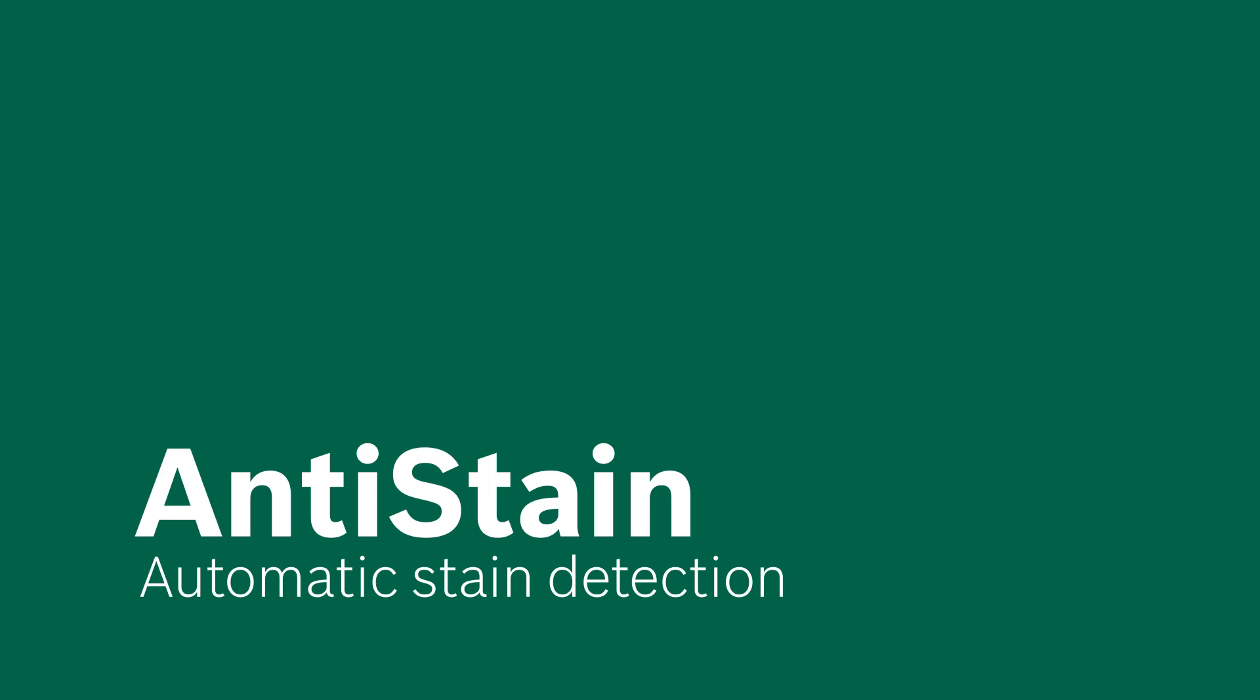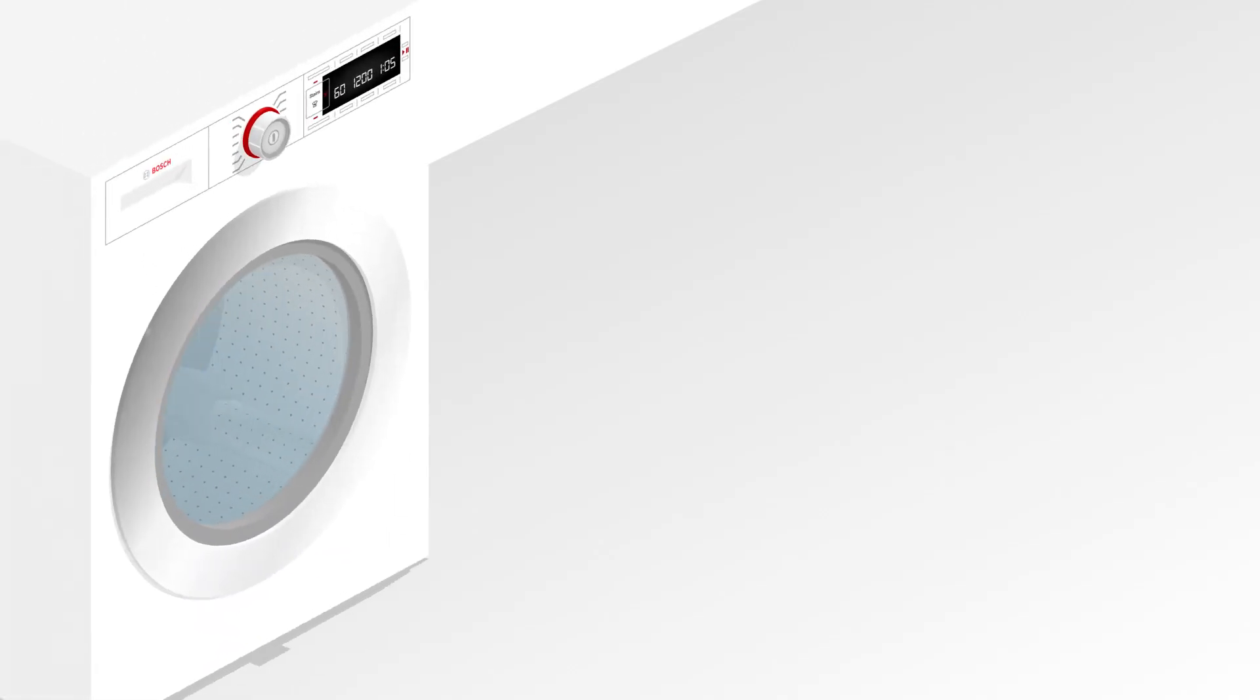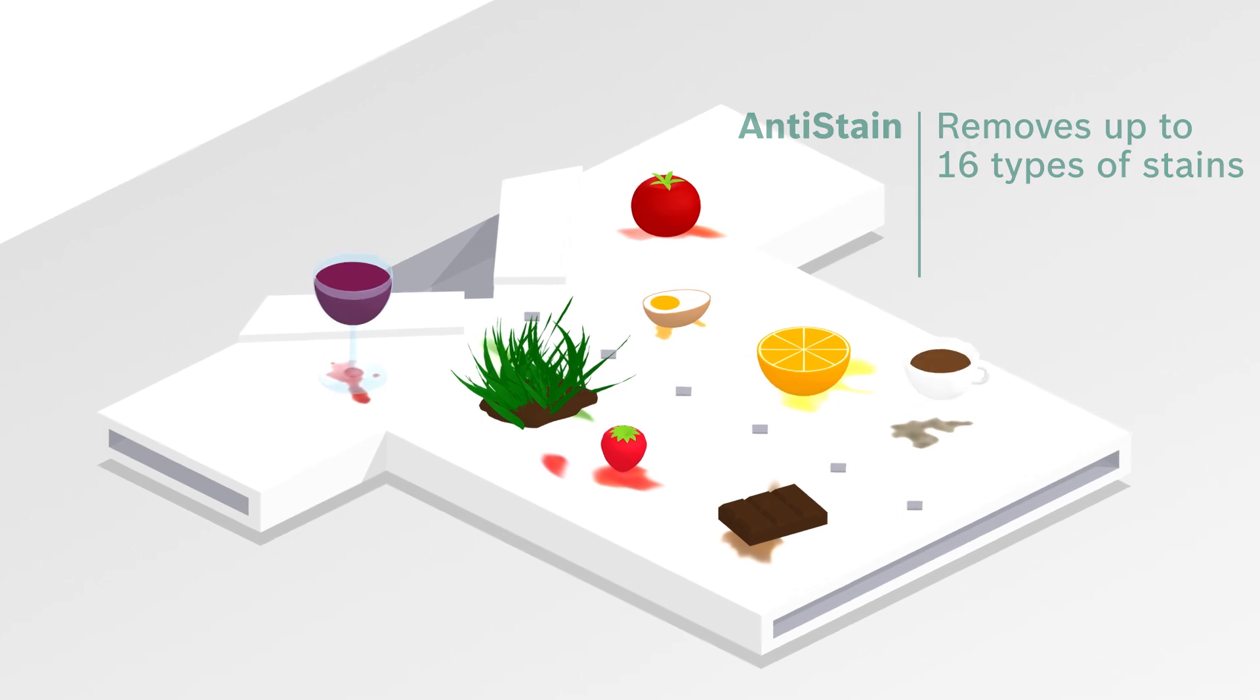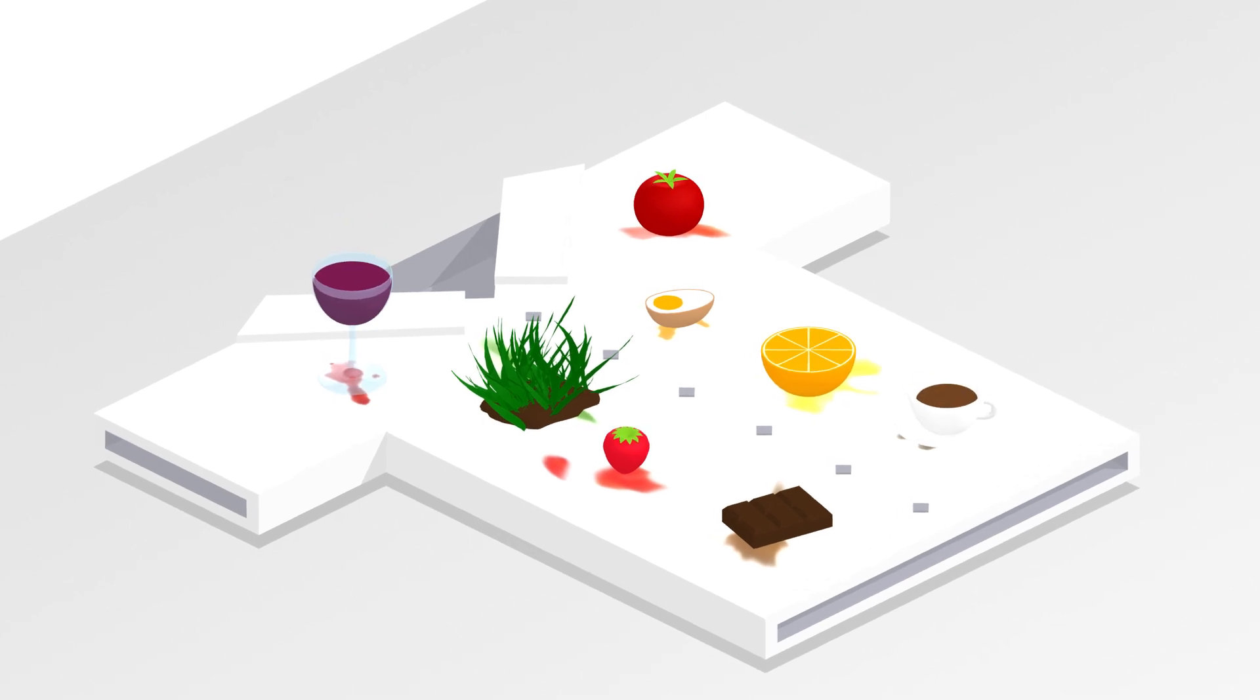Stains are the hardest challenge when it comes to doing laundry. Not anymore. With anti-stain technology, the machine automatically removes up to 16 of the most common stains, ranging from chocolate to grass and red wine.